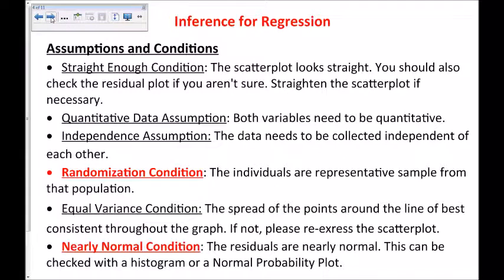Now, for the assumptions and conditions needed to do regression, there's quite a lot, but there's two that are really important. They are the straight enough condition, the scatterplot should look straight, and if you're not sure, you should check the residual plot. And if it's not straight, you should straighten the scatterplot using square roots or logs or whatever you need to do to straighten the scatterplot. The second condition, or assumption, I should say, is the quantitative data assumption. Both variables need to be quantitative.